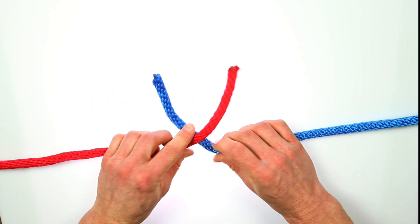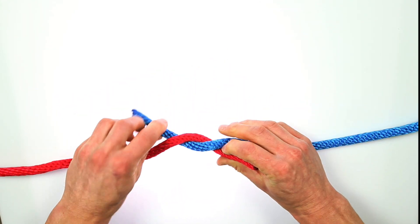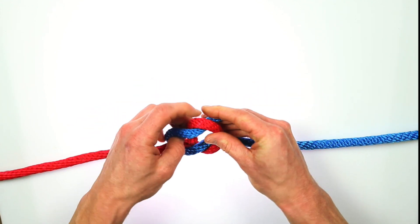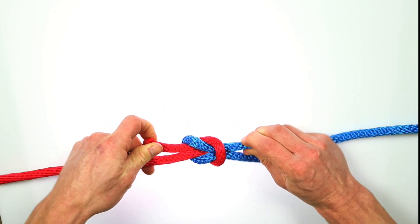So start by going left over right like this. Then do one more, but right over left. Tighten, and there you have it, a square knot.